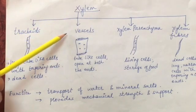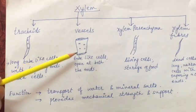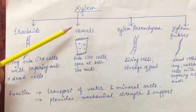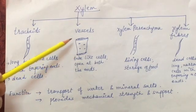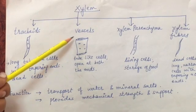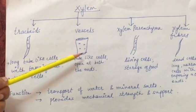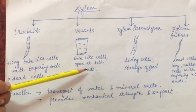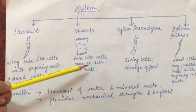Next we look at xylem vessels. These are formed of long cylinder-like cells placed one on top of the other. The cells are connected by plates, and these plates have pores, also called perforations. They help in the transport of water. These cells also have thickened walls, so they are also dead cells.